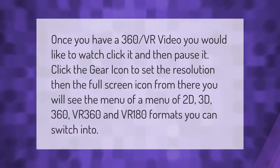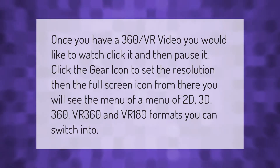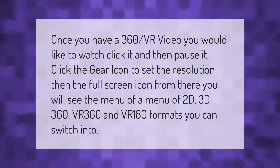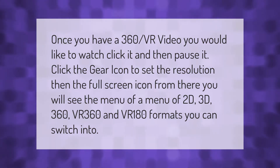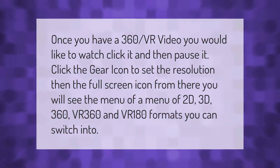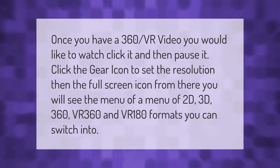Once you have a 360 VR video you would like to watch, click it and then pause it. Click the gear icon to set the resolution, then the full screen icon. From there you will see a menu of 2D, 3D, 360, VR 360, and VR 180 formats that you can switch into.